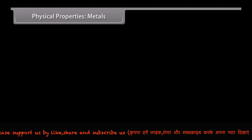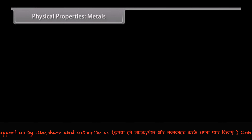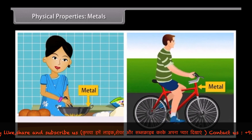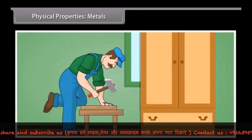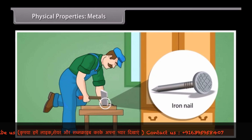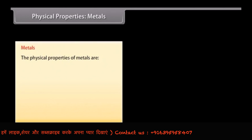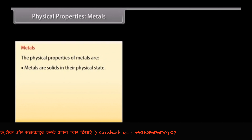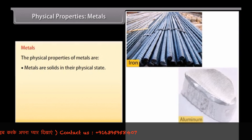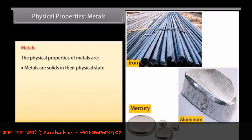Physical properties of metals. You come across a lot of metals and nonmetals in your day-to-day life. For example, the hammer that you use to fix nails is a metal, and the nail made of iron is also a metal. Physical state: metals are solid at room temperature — for example, iron and aluminium. Only mercury is a liquid metal.